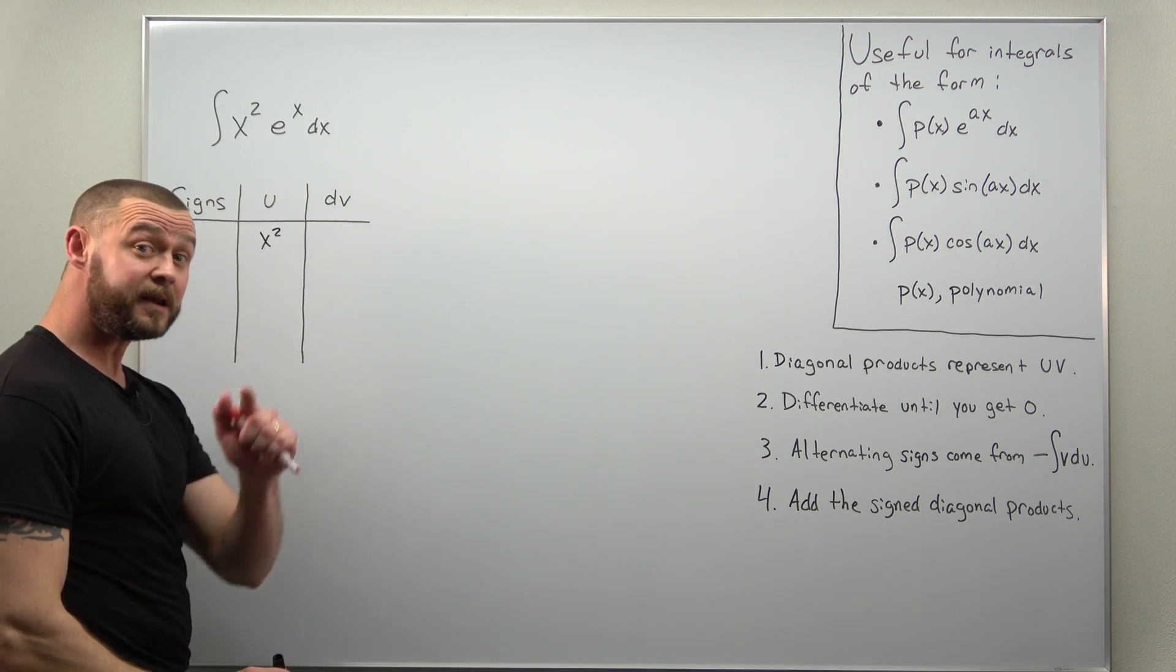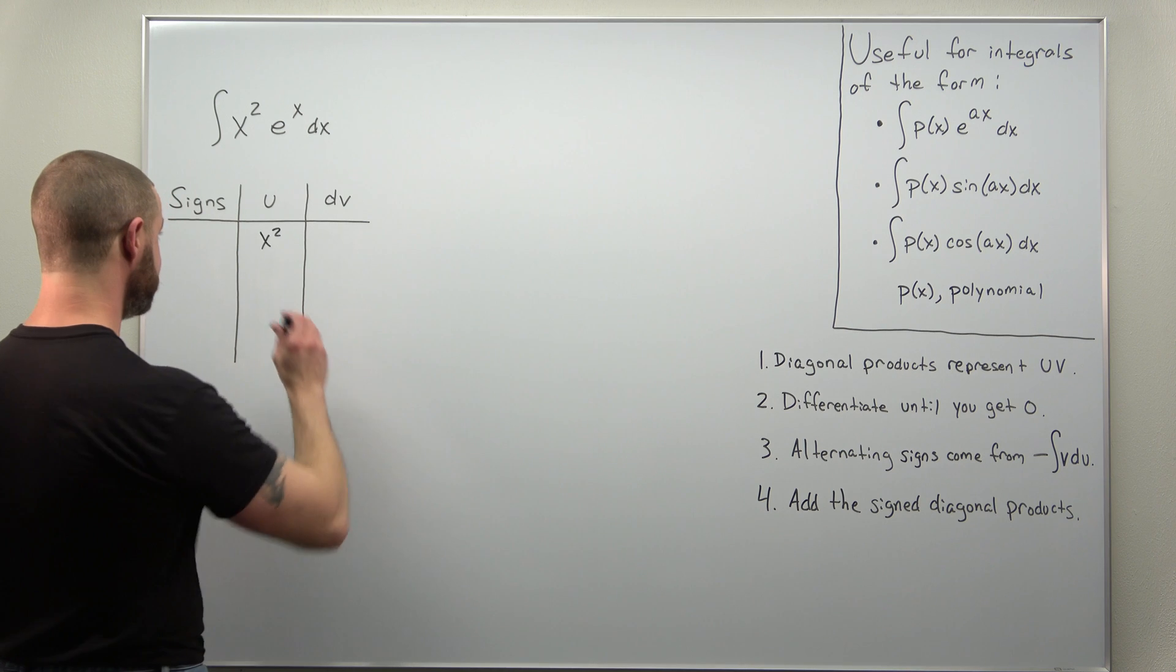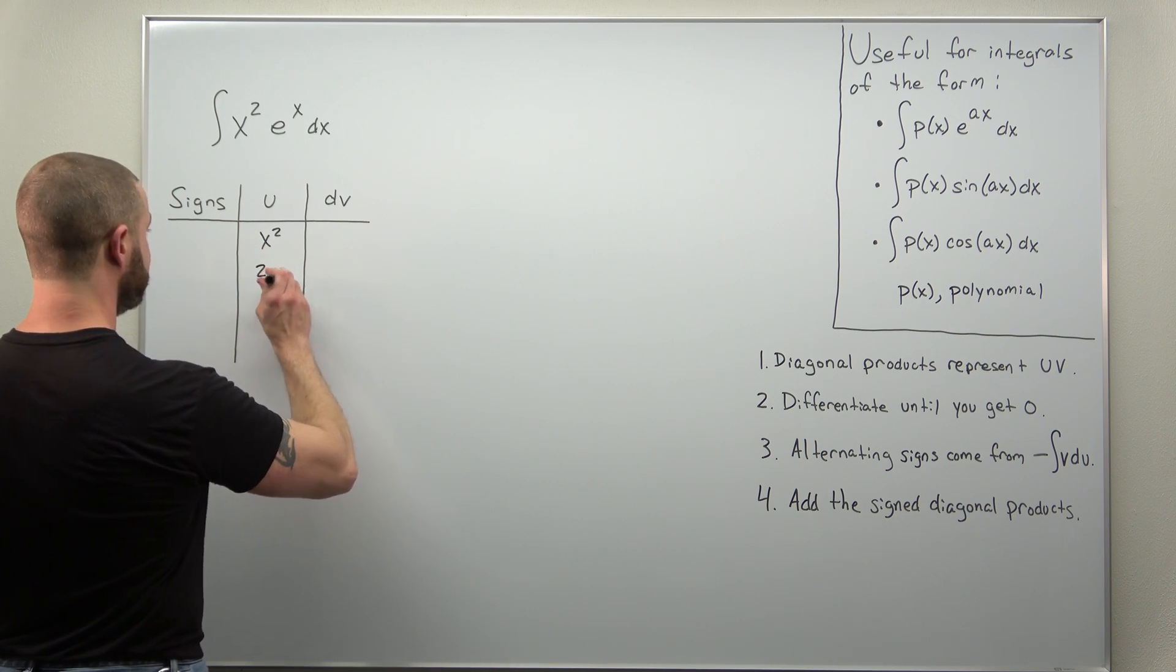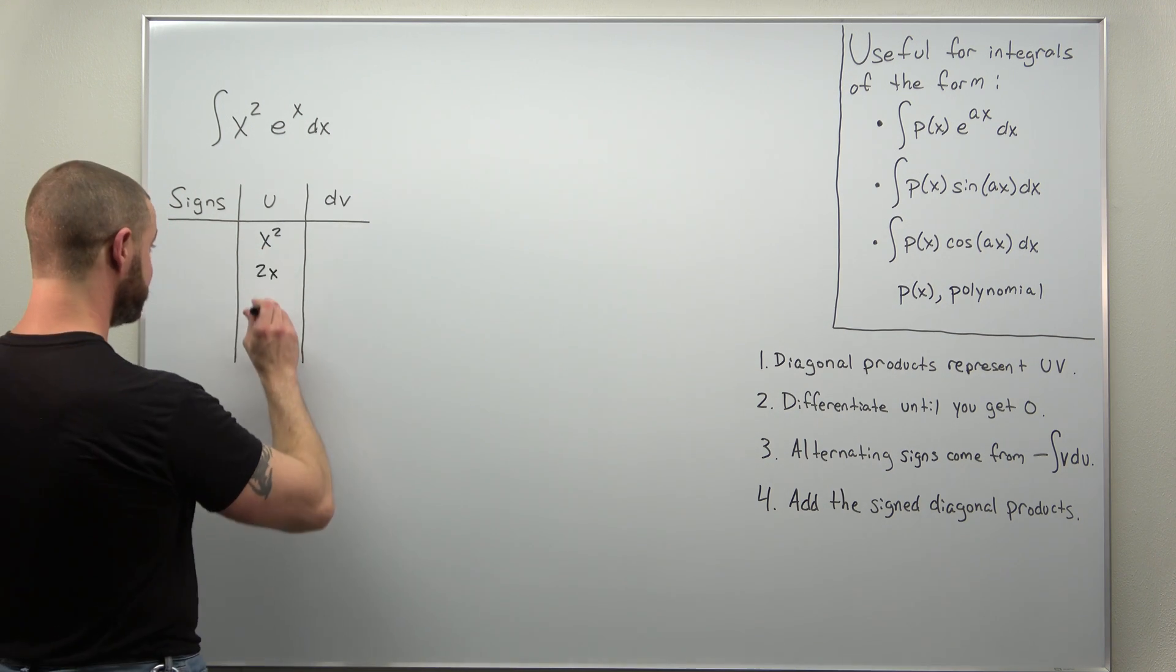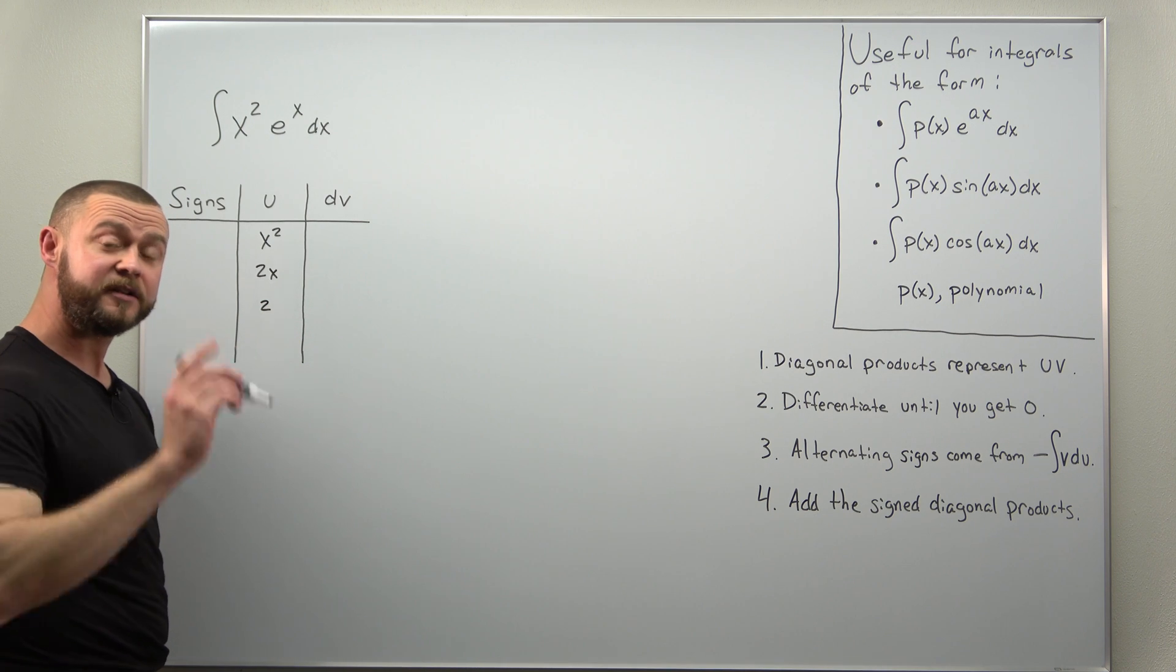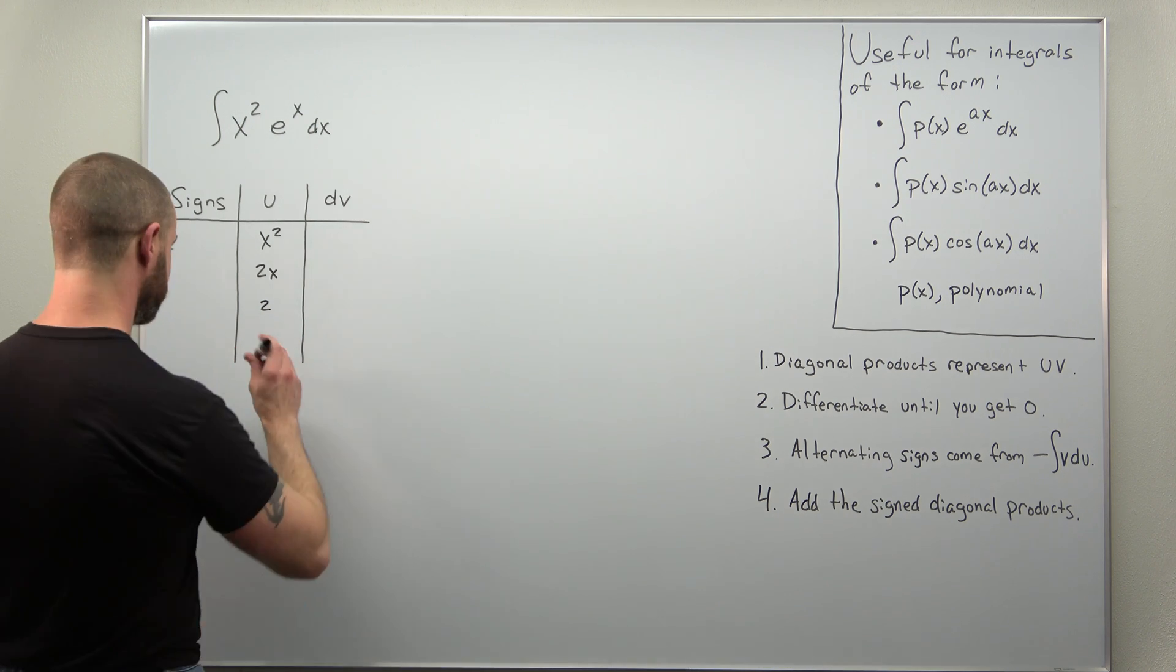Let's go ahead and immediately repeatedly differentiate that. The first derivative will be 2x, differentiate that again you'll get 2, and then differentiate one last time you'll get zero.